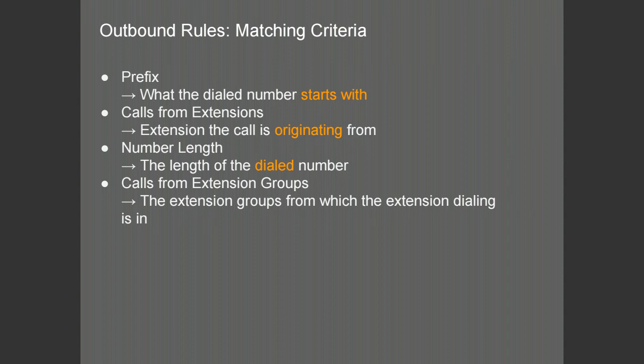The dialed number length can then be configured to limit the rule to a particular dialed number length — for example, this rule may only be valid for 11 digit numbers. In addition to the calls from extensions field, you will also have the choice of extension groups. In some cases, it may be tedious to remember which extensions belong to which extension group, so you can use the extension groups as an outgoing call routing group as well.